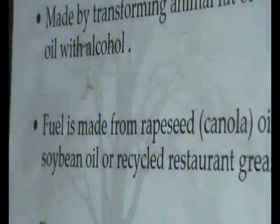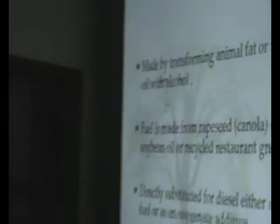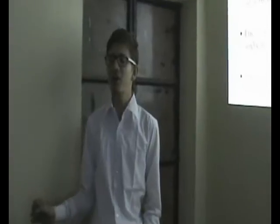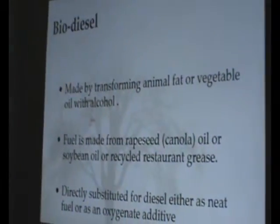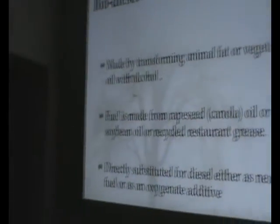As you all know, what is biodiesel? Biodiesel is basically a kind of diesel — a chemical substance that acts as a diesel but is derived from various biological sources such as seeds and different sources. It is basically made for generators and all those sources where diesel is used. We can use biodiesel in all those sources. Biodiesel is basically used when it is mixed with alcohol so that it resembles the chemical structure of diesel and acts as a diesel.